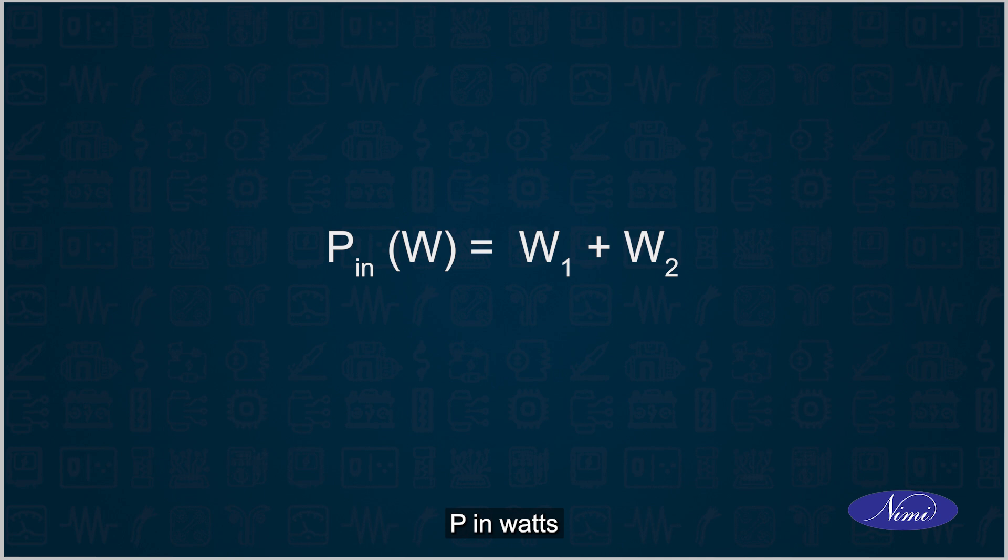P in watts is equal to W1 plus W2. Input power is the sum of wattmeter readings W1 and W2.